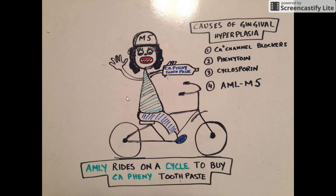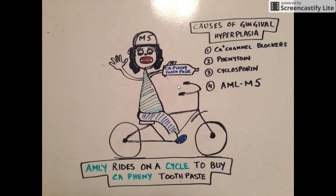My mnemonic for gingival hyperplasia is: there's a girl named Emily, she's riding a bicycle, and she is going to buy a toothpaste. The name of the toothpaste is 'Calcium Fenni Toothpaste' and it's a very famous toothpaste in the market. Let's start discussing what all these points are showing.